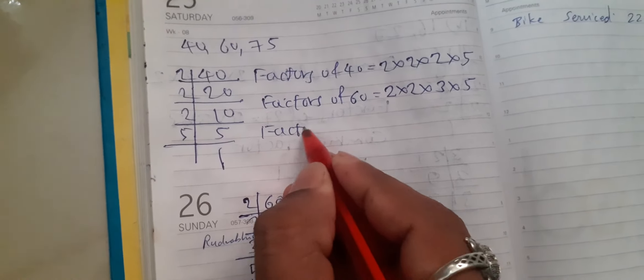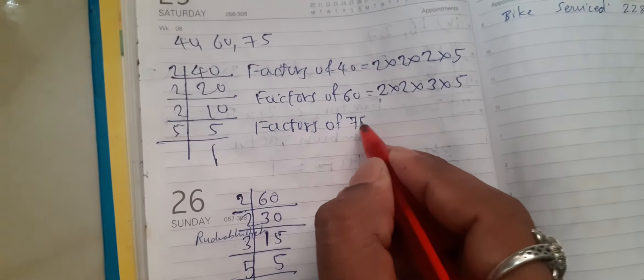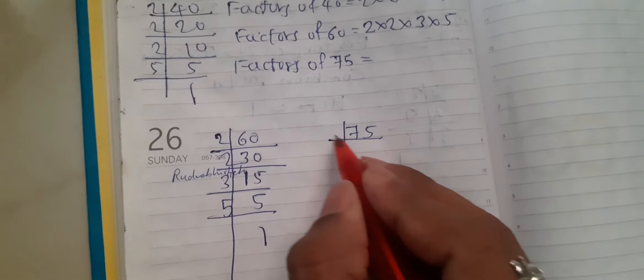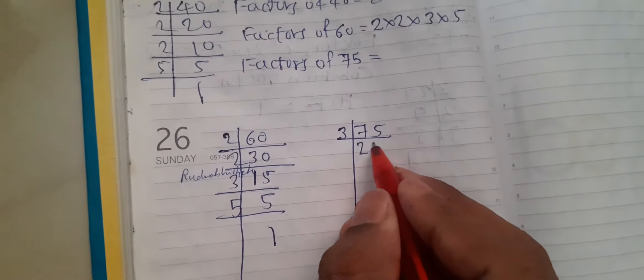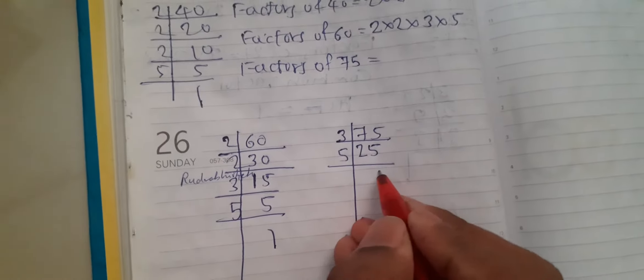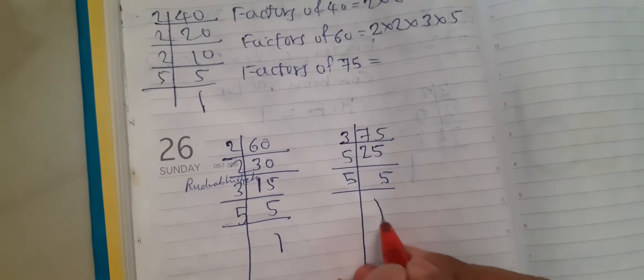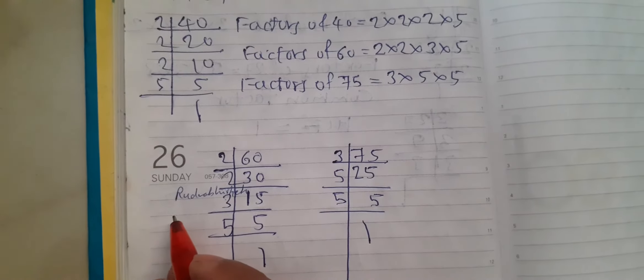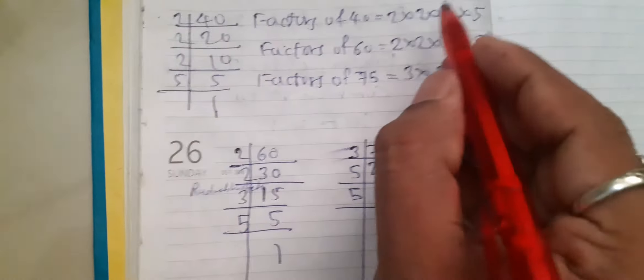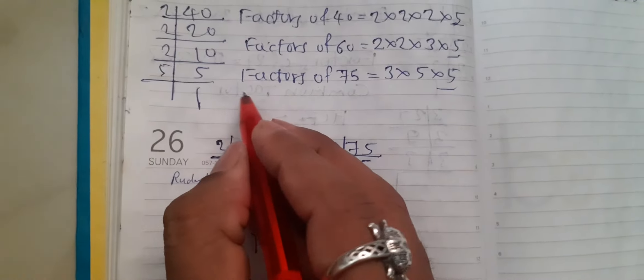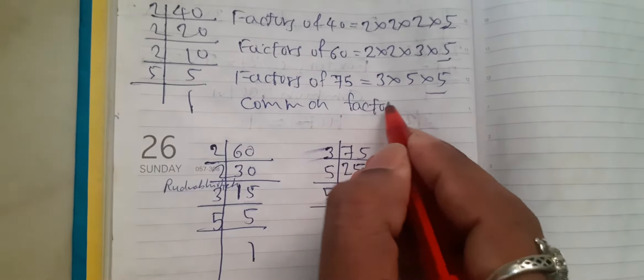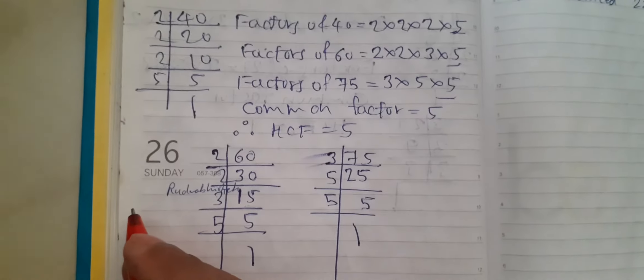Factors of 75. 75 won't go by 2, it will go by 3. 3 times 25 is 75. 5 times 5 is 25, 5 times 1 is 5. So factors of 75 is 3 into 5 into 5. 5 is the common factor. Common factor is equal to 5. Therefore HCF is equal to 5.